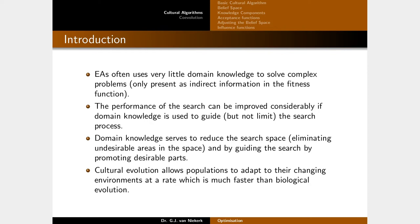One of the key strengths of evolutionary algorithms is its ability to find novel solutions to rather complex problems without any bias, guidance, or domain knowledge. But the performance of the search can be improved quite considerably if domain knowledge is used to guide the search but of course not limit the search process. The idea is that domain knowledge can reduce the search space by eliminating undesirable areas and promoting desirable areas.